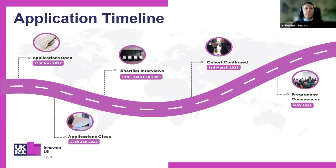The application period is open now. We're expecting a high number of applications, so the advice is to get your application in early and not leave it until the deadline of the 27th of January. Once we've passed the application deadline, we'll undertake shortlist interviews between the 13th and 24th of February, then look to confirm the cohort around the 3rd of March 2023. Once confirmed, we'll run through a period of onboarding including two onboarding workshops where we'll introduce a strategic development plan for the participating businesses.